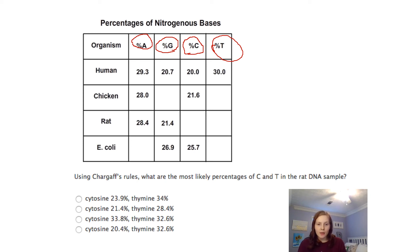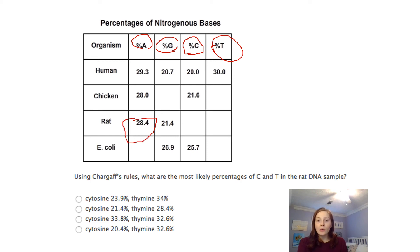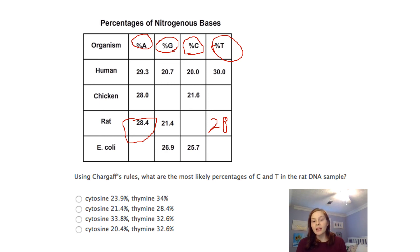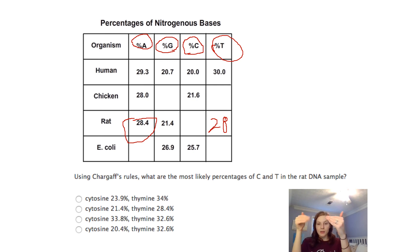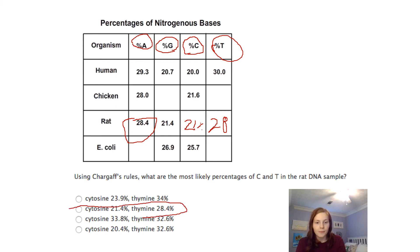Using Chargaff's rules: what are the most likely percentages of C and T in the rat DNA sample? The rat DNA sample shows 28.4% adenine. Since A binds with T, T would also be around 28.4%. The percent guanine is 21.4%, and since guanine binds with cytosine, cytosine would also be around 21.4%. The answer choice for this one would be B.